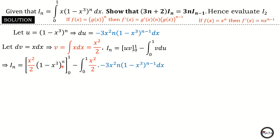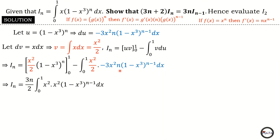Substituting, u is (1 minus x cubed) raised to the power n, v is x squared over two, evaluated from zero to one, minus the integral from zero to one of v du — where v is x squared over two and du is negative 3x squared times n times (1 minus x cubed) raised to the power n minus one dx. Fitting x equals one: the interior (1 minus 1 cubed) goes to zero, so the upper bound gives zero. Fitting x equals zero: everything gives zero. So the uv term equals zero.